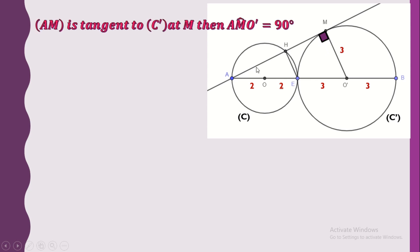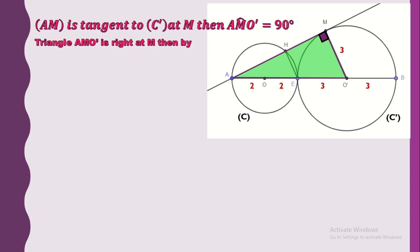Now they are asking us to calculate the length of AM. Note that we have a right triangle AMO prime. In a right triangle we can apply the Pythagorean theorem. We have the length of AO prime: we can add 2 plus 2 plus 3, which equals 7. We also have the length of O prime M, which is a radius of circle C prime, so it equals 3. Then we can easily find AM using the Pythagorean theorem.